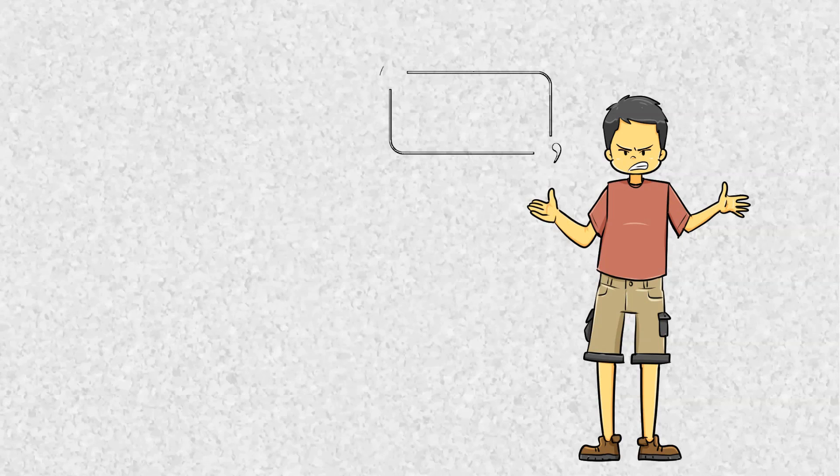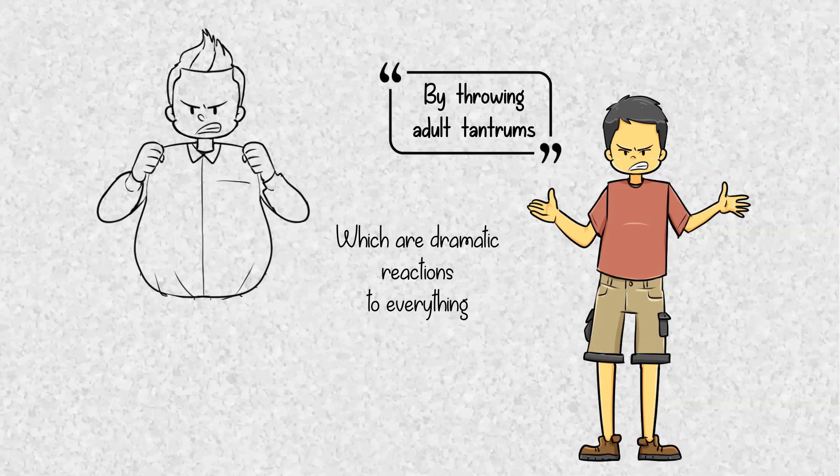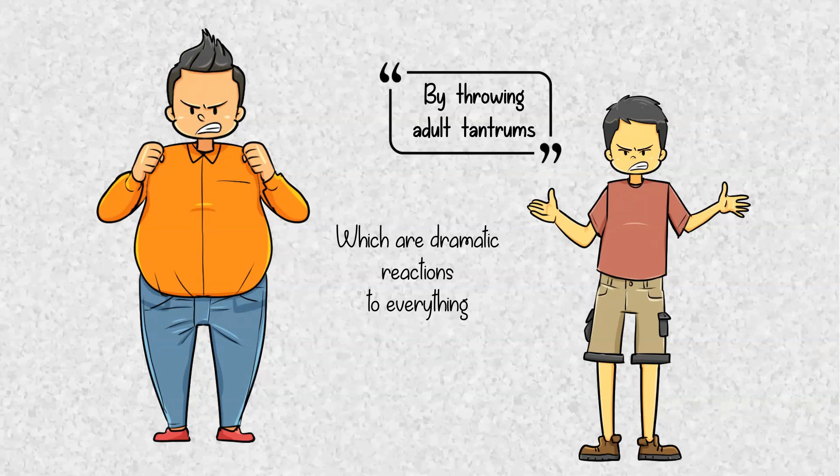And the best way for them to elicit this kind of response from you is by throwing adult tantrums, which are dramatic reactions to everything. You might think of it as an outburst reaction to something, but it could be a well-planned scheme as well.